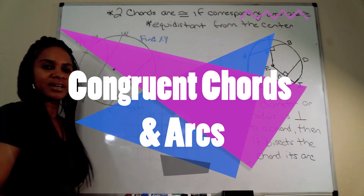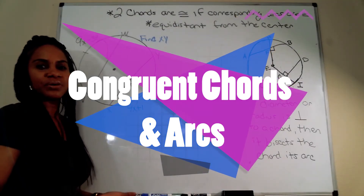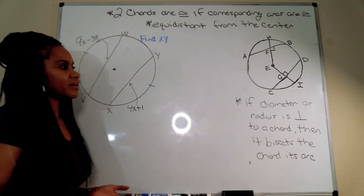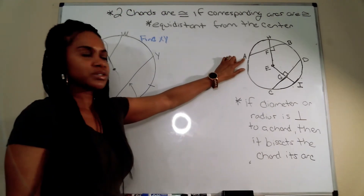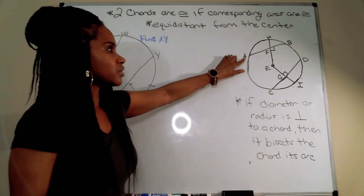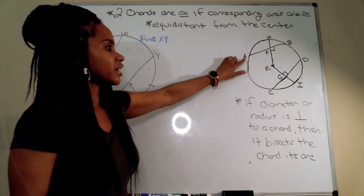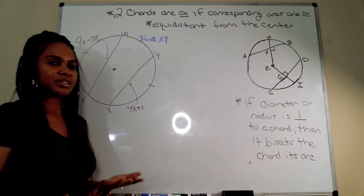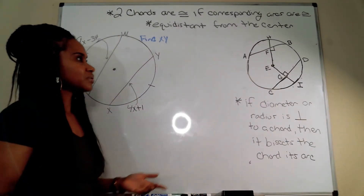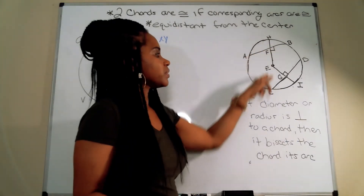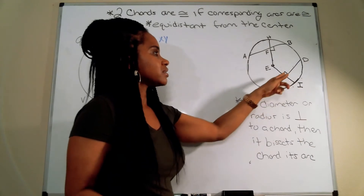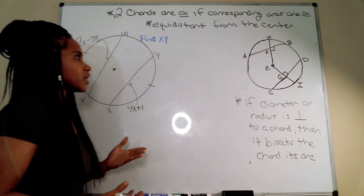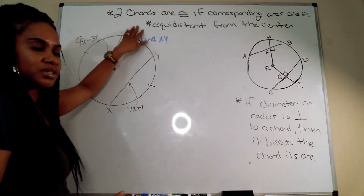In this lesson we're looking at congruent chords and arcs. A chord has two endpoints on a circle — these are chords AB and CD. An arc is just a portion of that circle, so here we have arc AB and arc CD. Now let's look at some properties or conditions of chords and arcs.